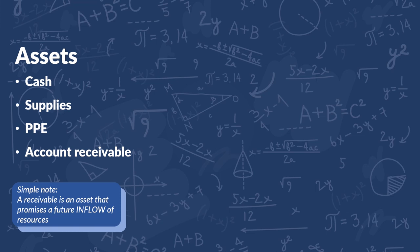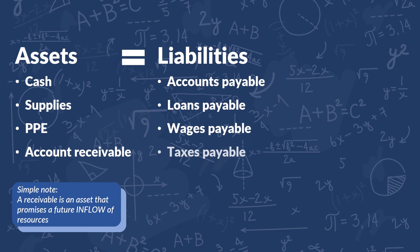Liabilities can be made up of accounts payable, loans payable, wages payable, and taxes payable. A payable is a liability that promises a future outflow of resources.